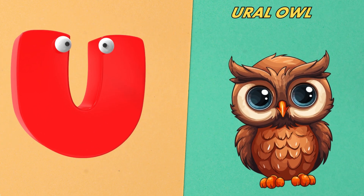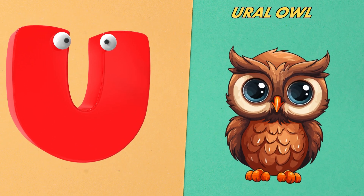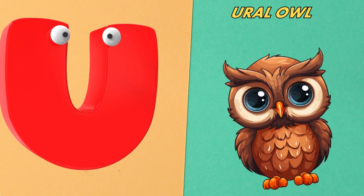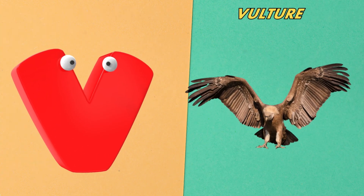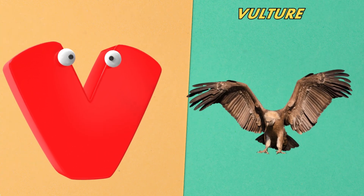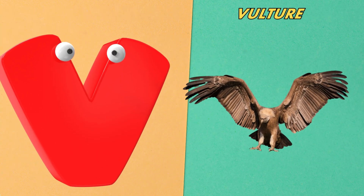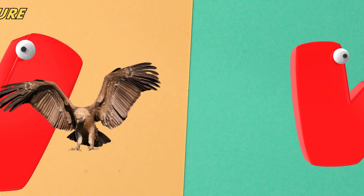U is for ural owl. Ural owl. V is for vulture. Vulture.